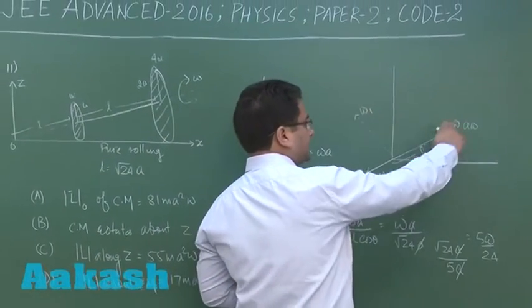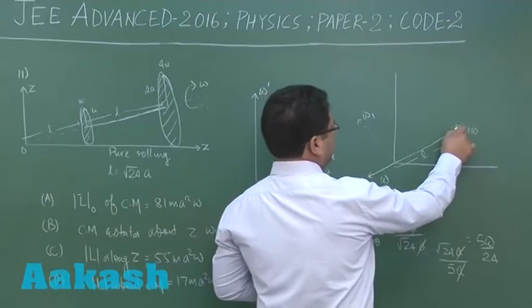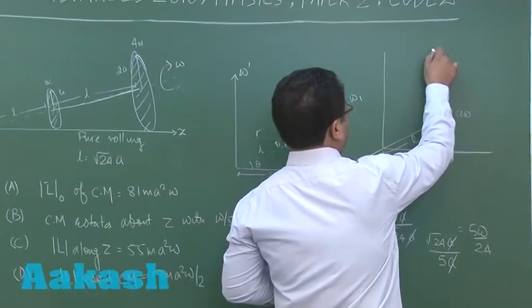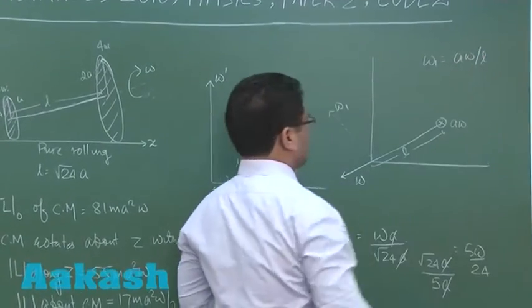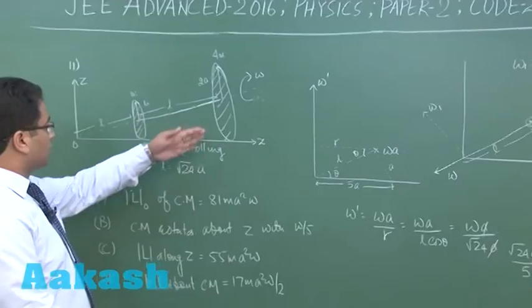Now with respect to this axis, you could see the velocity upon distance, so you could write that omega 1 would be a omega upon L. Now you should realize what do I mean by omega 1.